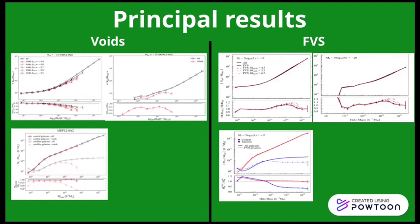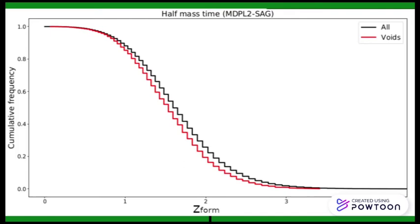To explore a possible cause for the variations, we studied the formation times of halos in both regions. For this, we defined the formation redshift like the redshift in which a halo accreted half of its maximum mass for the first time.